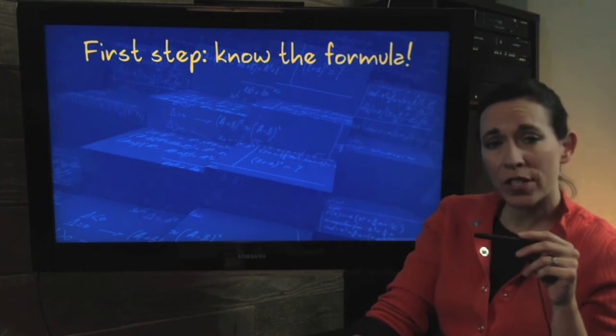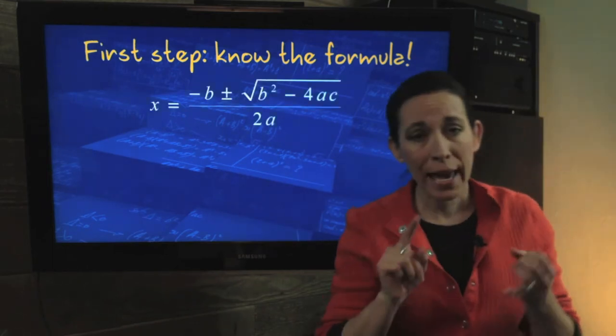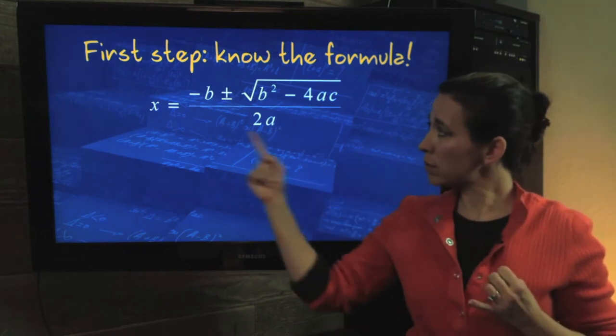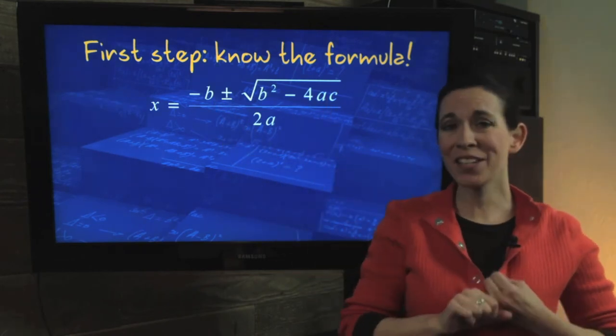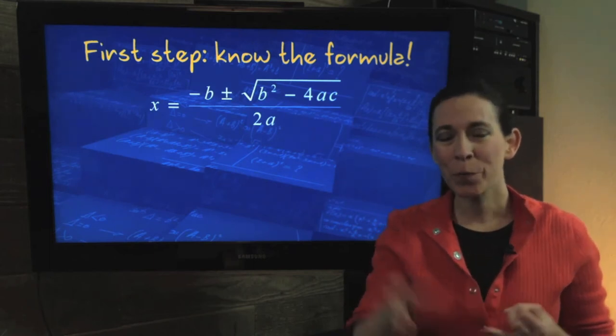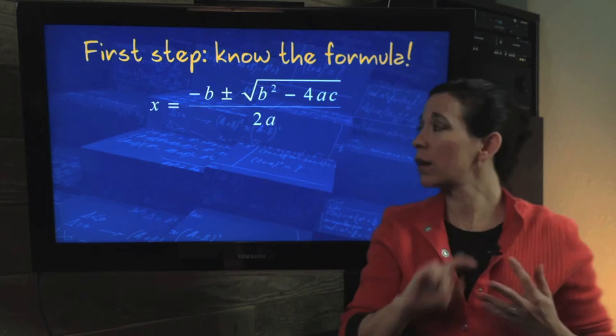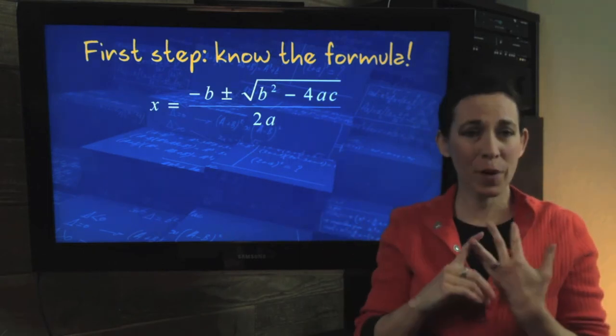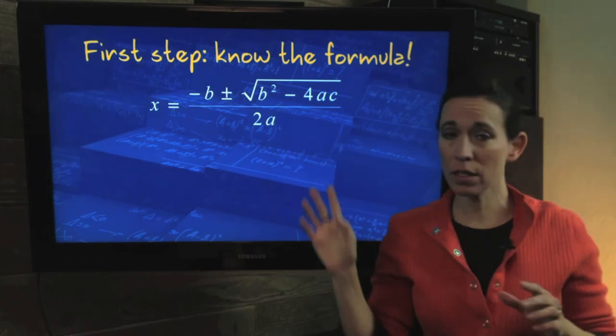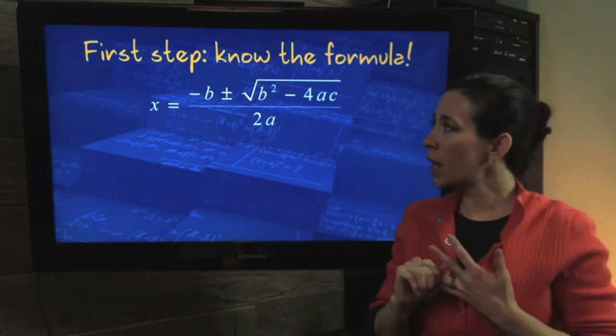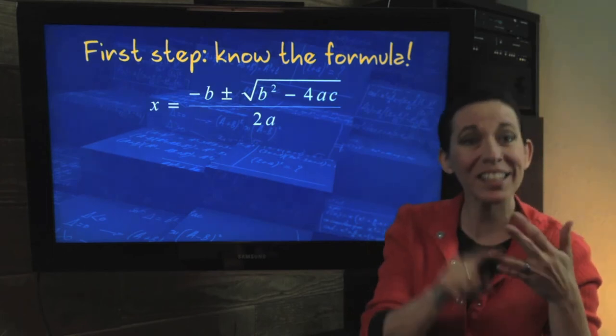So your first step, know the formula. You can make up a story about what b and a and c stand for. You can sing it to pop goes the weasel, which I'm not going to attempt right now, but it's public domain so I could. But you could sing it: x equals opposite b plus or minus square root b squared minus 4ac all over 2a. And I just did it anyway, didn't I? Sounds silly, but it works.